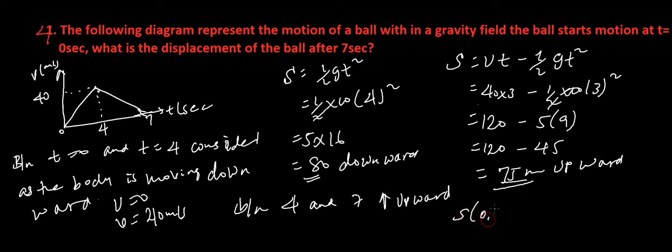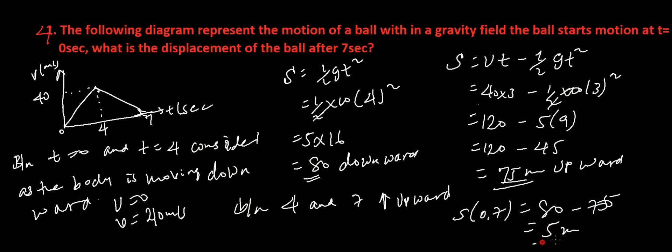Therefore the total displacement between t equals zero and t equals seven is 80 minus 75, which equals 5 meters.